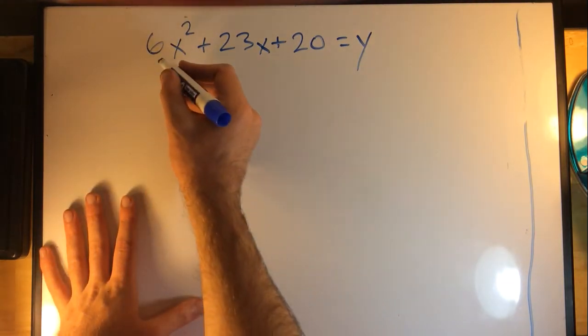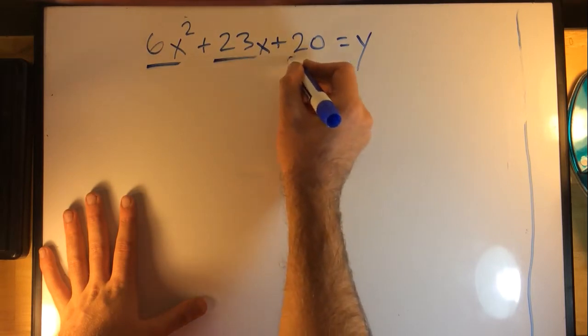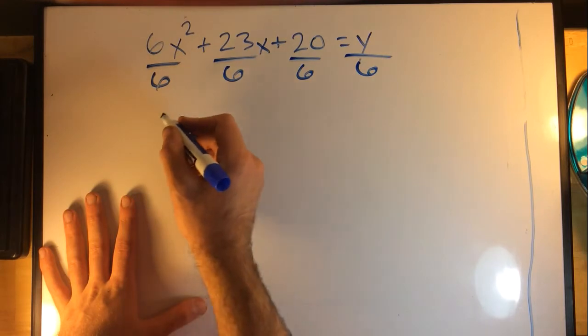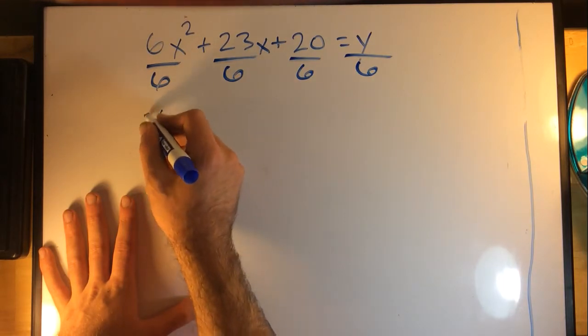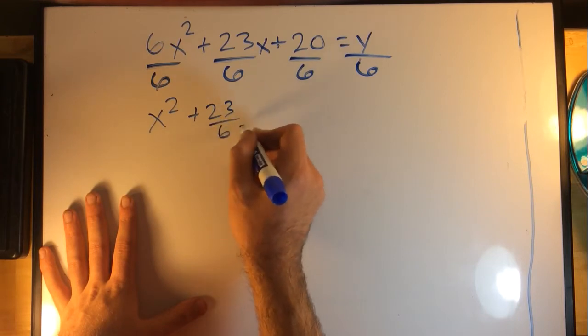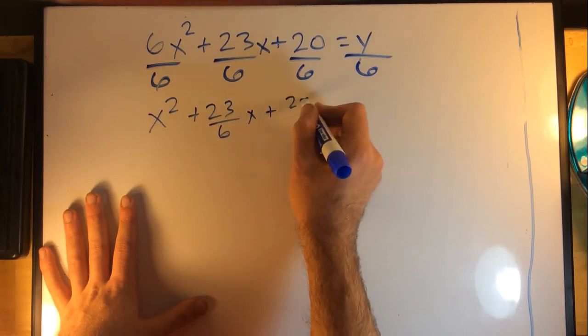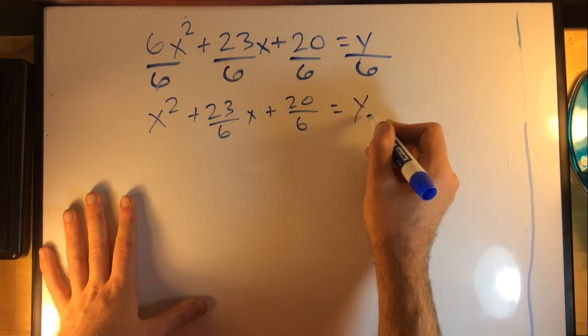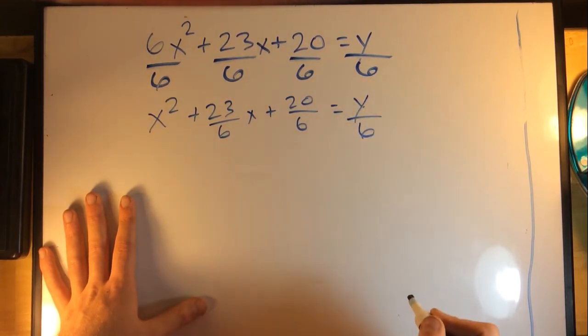For this next part I'm going to have x² + 23/6 x + 20/6 = y/6.